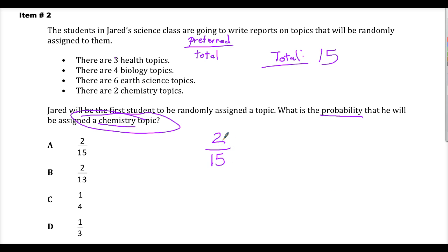So that's it. The probability that he will be assigned a chemistry topic is two over fifteen. If you're a percent type, all you have to do is divide two by fifteen and then multiply by a hundred and it gives you the percentage.